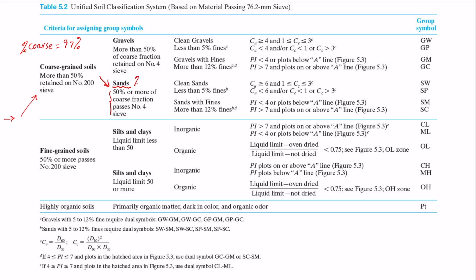Next, let's look at the fine contents. We have 3 percent fines, so we have clean sands - that means we have less than 5 percent fines. So it's a clean sand.